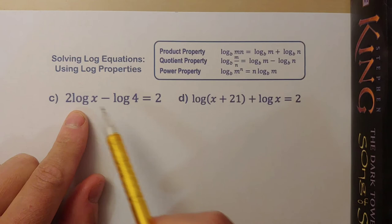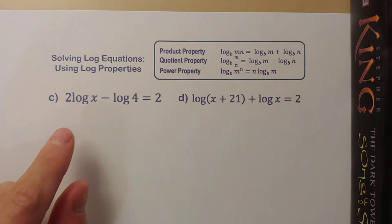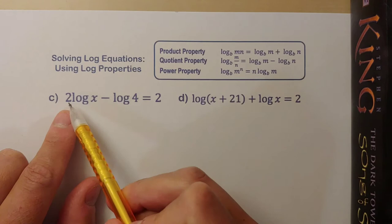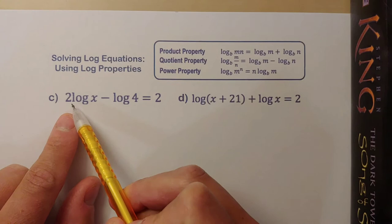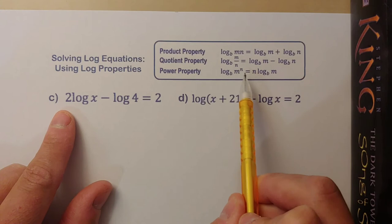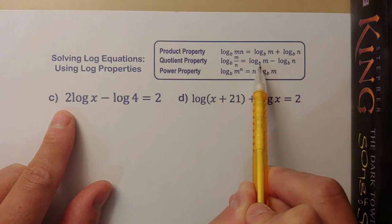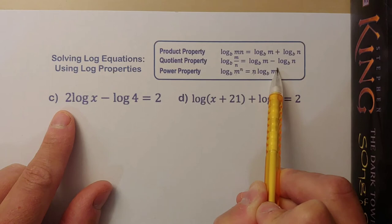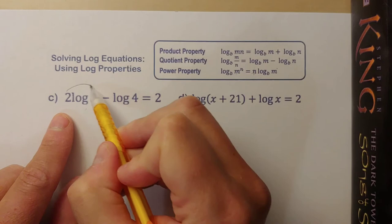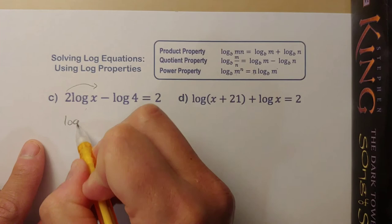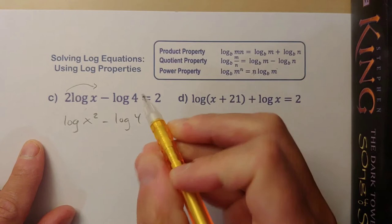Alright, so once again I have a couple logs, they have the same base, and if I could combine these together then I would be able to convert to exponential form and solve. However, I have this issue of this 2, this coefficient in front. We have this power property that says a term with an exponent can be rewritten by pulling that exponent down to the front. The opposite is also true. I can take that coefficient n and move it back to being an exponent. So I'm going to move this 2 back up as an exponent using the power property. I can rewrite this as log base 10 of x squared minus log base 10 of 4 equals 2.